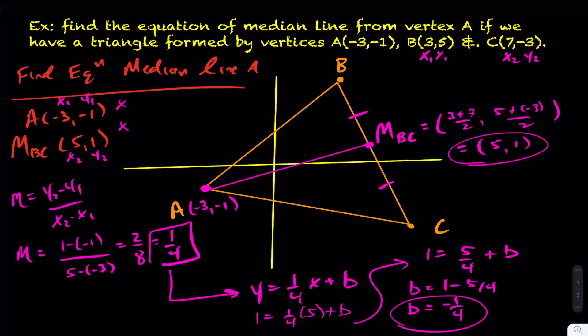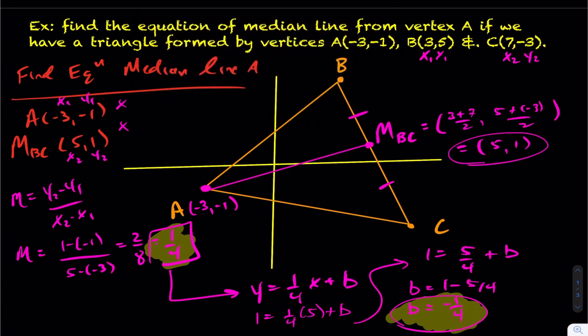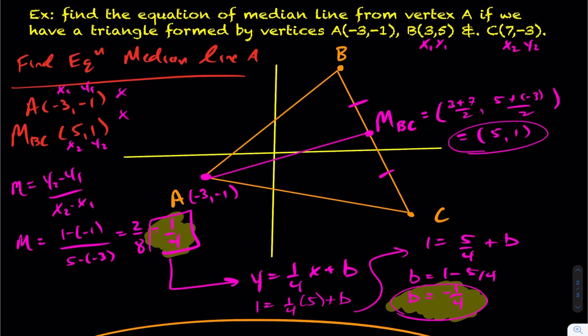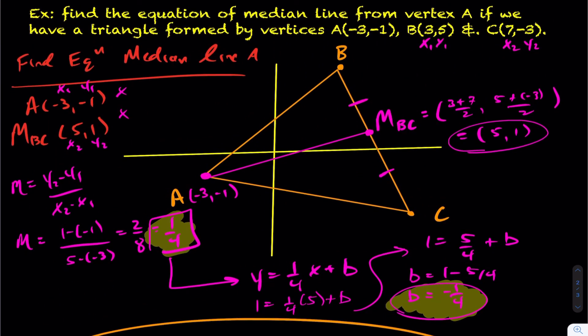Okay. So therefore, the equation of median line A has a slope of 1 quarter and a y-intercept of negative 1 quarter. So putting this all together here, I'll just kind of write it down here. My answer, the equation of median line A is y = (1/4)x - 1/4. Okay. So that concludes finding the equation of a median line.